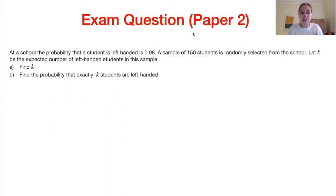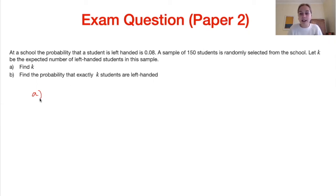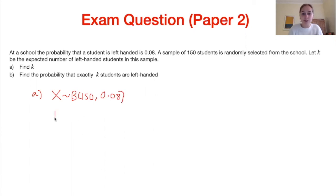To find k, we show the examiner that X, the number of left-handed students, is binomially distributed with n = 150 and p = 0.08. The expected value of a binomial distribution is n times p, which is 150 × 0.08 = 12. So k equals 12.